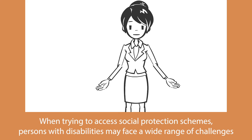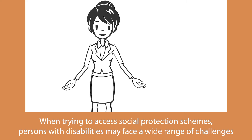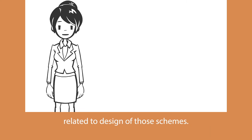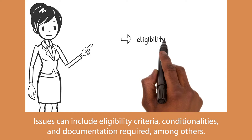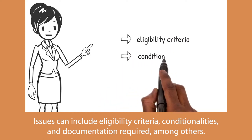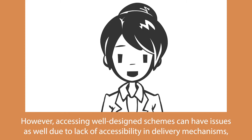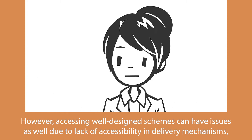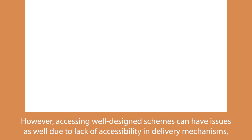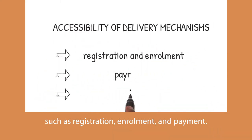When trying to access social protection schemes, persons with disabilities may face a wide range of challenges related to the design of those schemes. Issues can include eligibility criteria, conditionalities, and documentation required, among others. However, accessing well-designed schemes can have issues as well due to lack of accessibility in delivery mechanisms such as registration, enrolment, and payment.